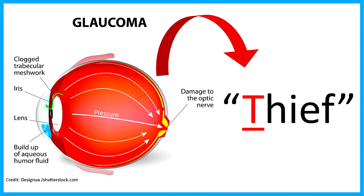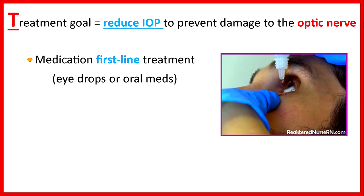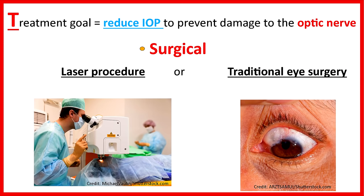Now let's talk about the key concepts to know about glaucoma as the nurse. To remember these, we use the word THIEF. T is for treatment goals. The treatment goal for glaucoma is to reduce the intraocular pressure, which will help prevent damage to the optic nerve. Medications are the first line treatment for glaucoma — most forms are eye drops, though patients can also receive oral medications. Surgical treatment can also be provided, including laser procedures or traditional eye surgery.